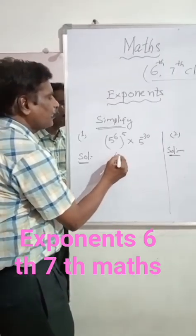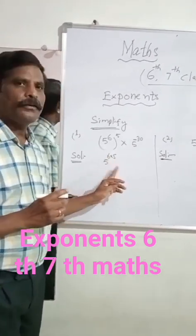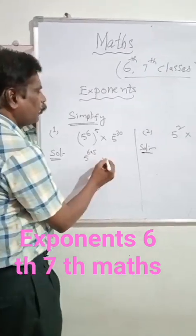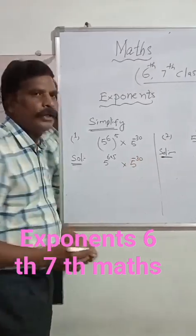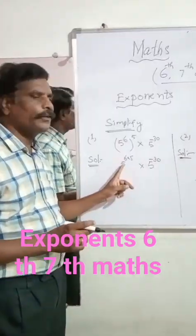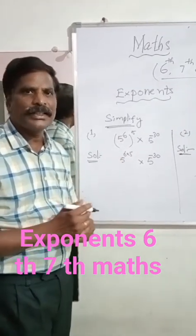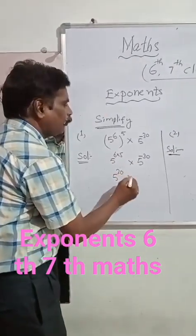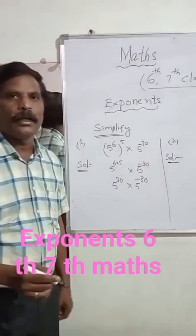So 5 power 6 into 5: the exponents multiply. 6 into 5 gives us the power, into 5 to the power of minus 30. So 5 to the power of 6 into 5 is 30 — 6 fives are 30. So we now have 5 power 30 into 5 power minus 30.